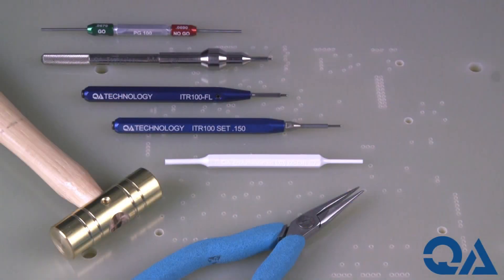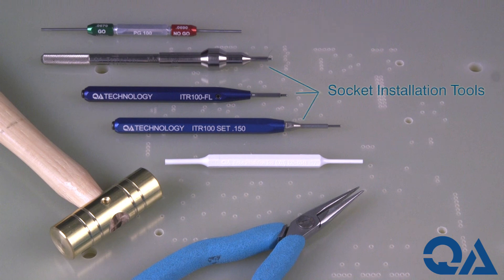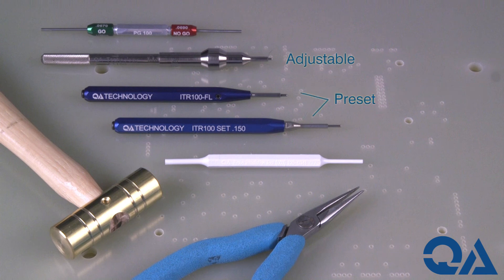To install QA sockets you'll need a go, no-go gauge to verify the hole size, a socket installation tool (we offer an adjustable or preset version), and a hammer. To install the probe you'll need the probe installation tool.